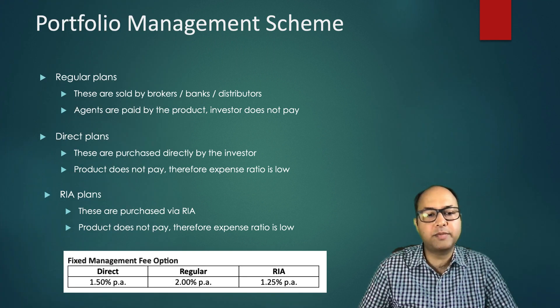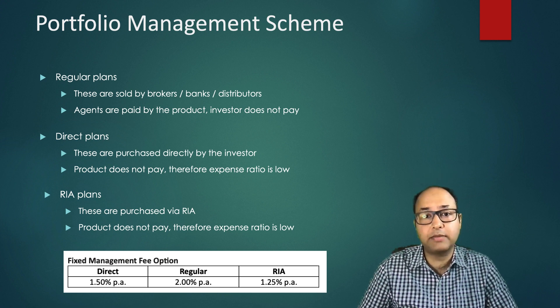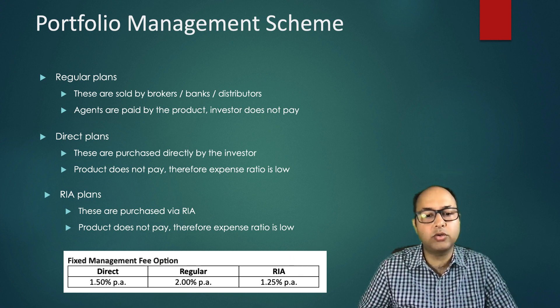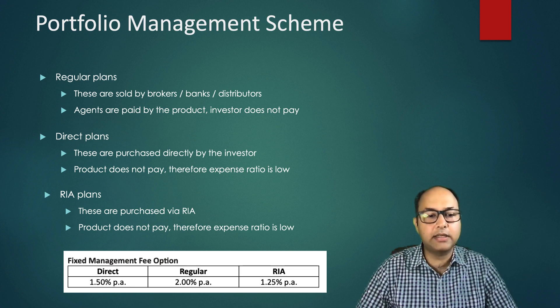When comparing across PMS providers, expenses and fee structures can be very different. As an example of a fixed management fee structure: the RIA plan is the lowest at 1.25 percent, the direct plan is in the middle, and the regular plan is the most expensive. So an investor dealing directly with the company ends up paying 0.25 percent more than through an RIA.